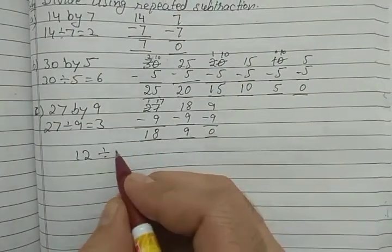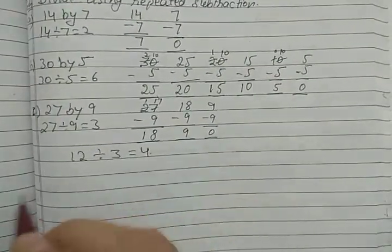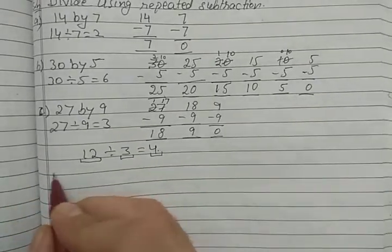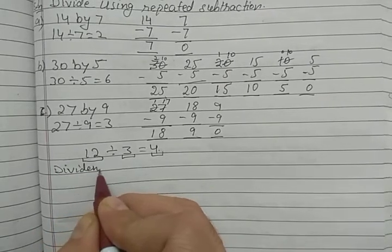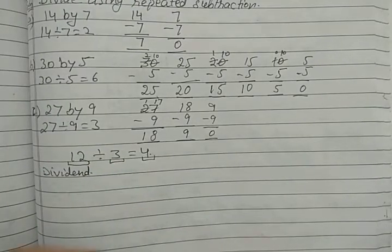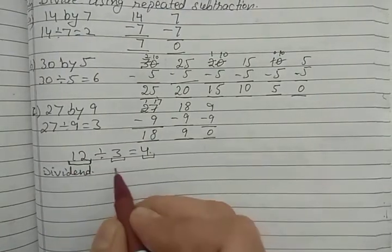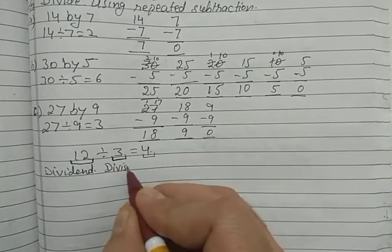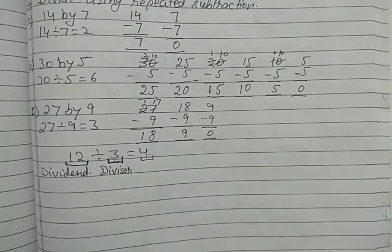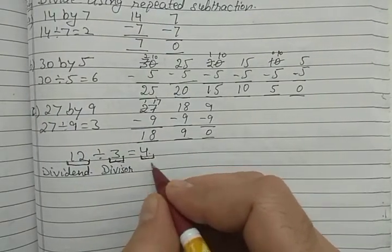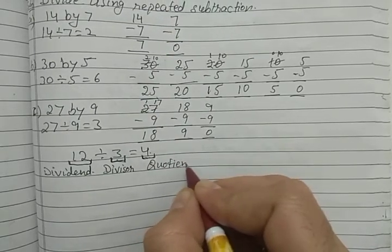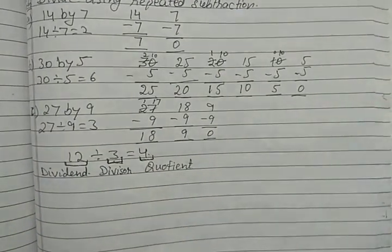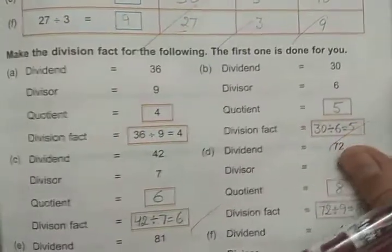So our division fact — suppose we have to divide 12 by 3, so 3 fours are 12. What do we call these terms? This is our dividend — that means the number to be divided is called the dividend. The number which divides — that means the one whose table we recite — is called the divisor. And the result, which is our answer, is called the quotient. So these are the three terms used.